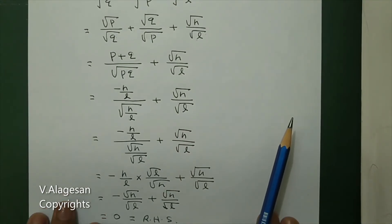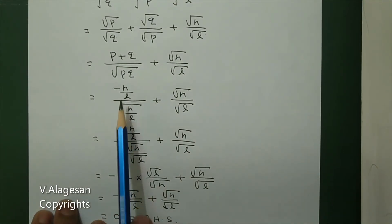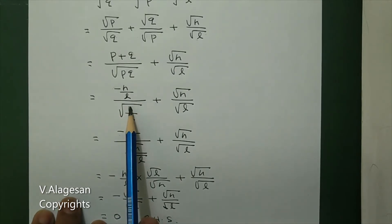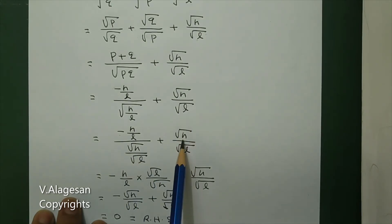Next, in the numerator update the denominator. Denominator separate: √(n/l) = √n/√l. Plus the second term: √n/√l.